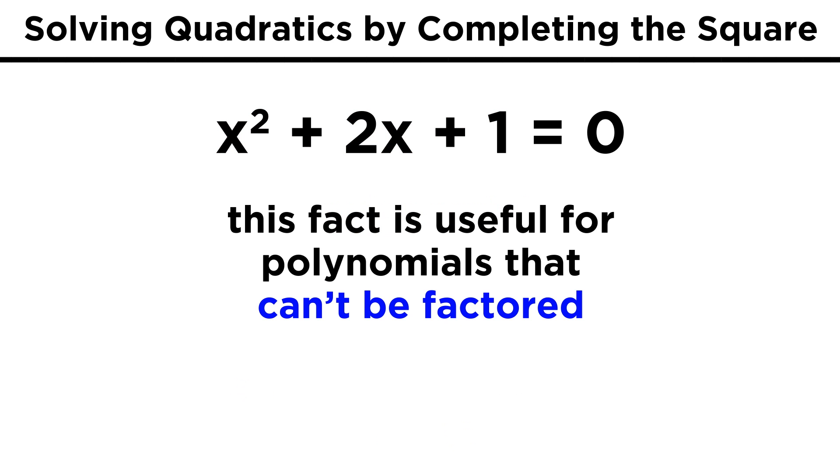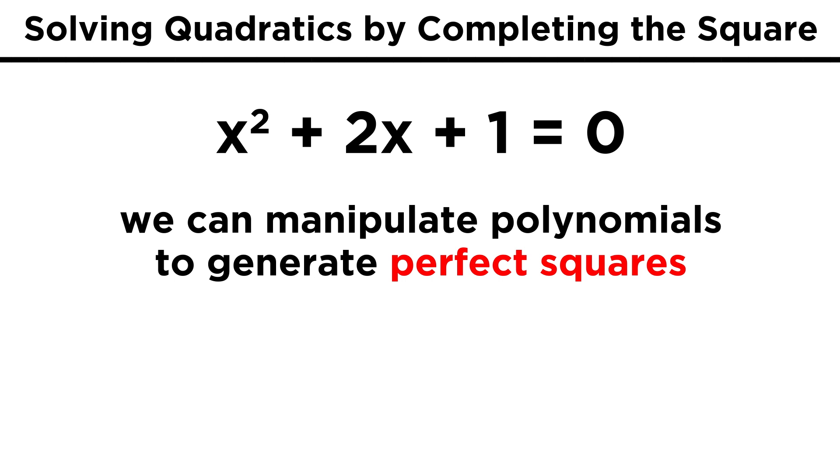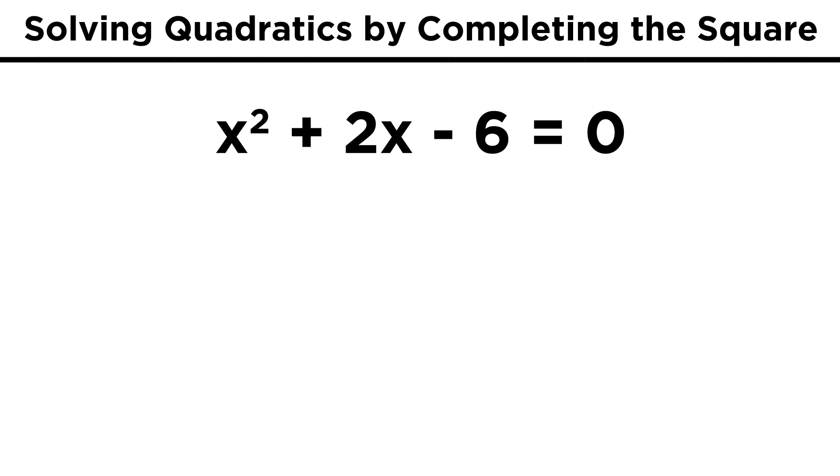This kind of thinking comes in handy for certain polynomials, because while they might not factor, we can deliberately add some term to the expression that will manufacture a polynomial that is a perfect square, thus allowing us to express it as the square of a binomial and making it easy to solve. This will make more sense with an example.